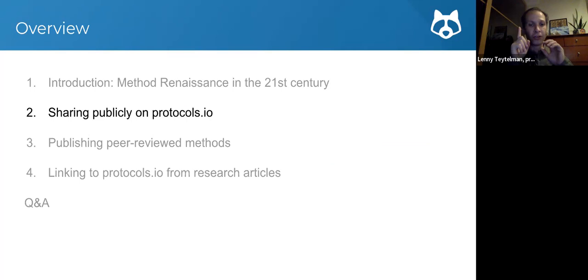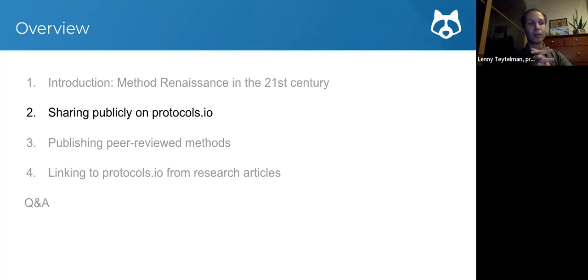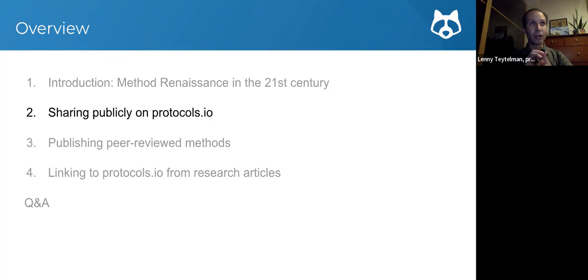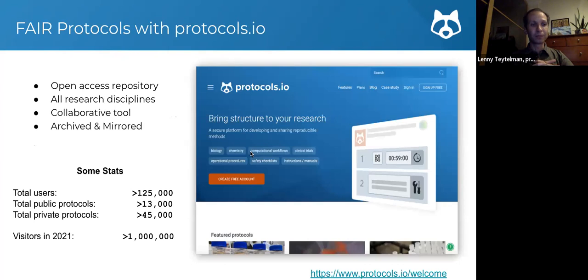What we believe at protocols.io is that it's not just one single key groundbreaking method that should be shared as in Nature Methods. We believe that all of that tweaking, optimization, corrections — those months of work getting something that should have worked quickly but didn't to work, whether it was working in geckos but not in another lizard, or in grasshoppers but not ladybugs — all of that method development can save people a lot of time and should be recognized and rewarded. We welcome public sharing of all methods, not just the first big groundbreaking one.